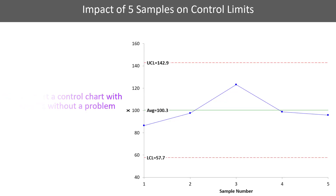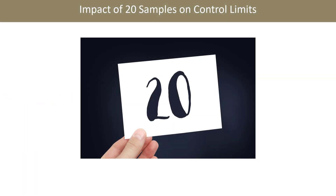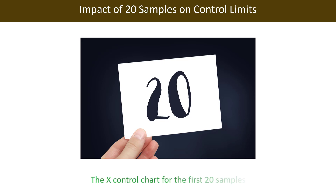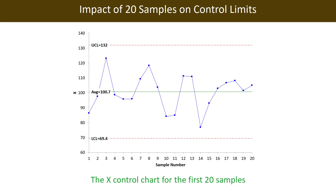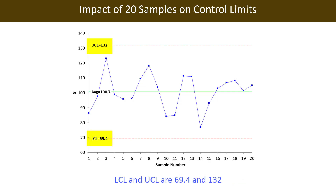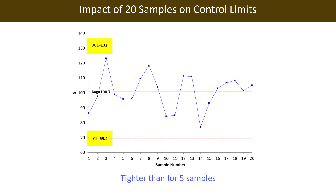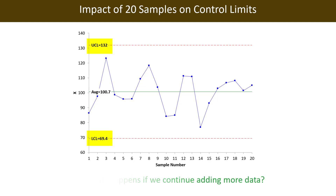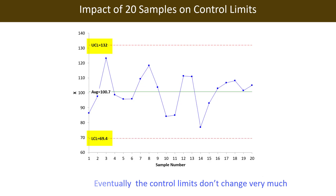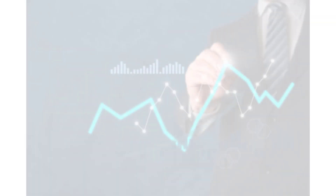You can start a control chart with 5 samples without a problem. Now let's say we use 20 samples. Here's the X control chart based on the first 20 samples — again, it's in statistical control. The upper and lower control limits are 132 and 69.4. So what's happened as we move from 5 samples to 20 samples? They've gotten tighter. What happens if we continue adding more data beyond 20? Eventually the control limits don't change very much, because you have enough data for good control limits and they've leveled off.